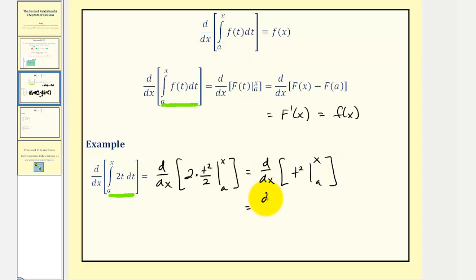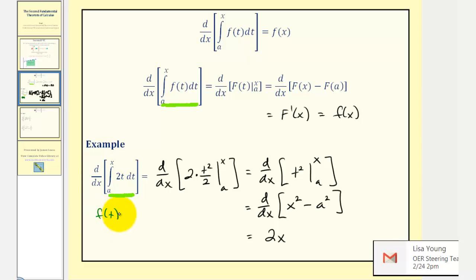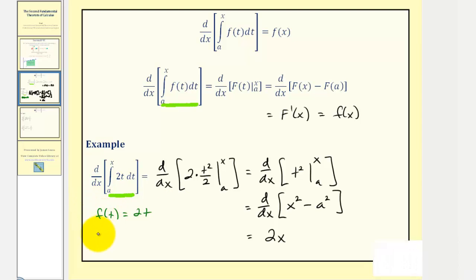This gives us the derivative with respect to x of x squared minus a squared. The derivative of x squared is two x, and the derivative of a squared is zero since a squared is a constant. Looking back at this integral, the integrand function f of t is two t, and if we evaluate this at x we get f of x equals two x, which is what we found the long way.